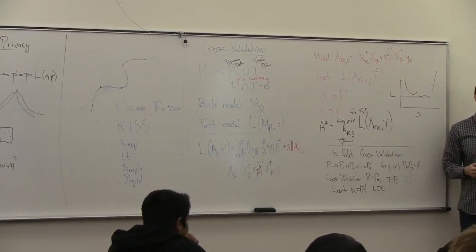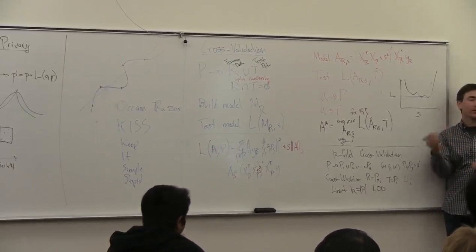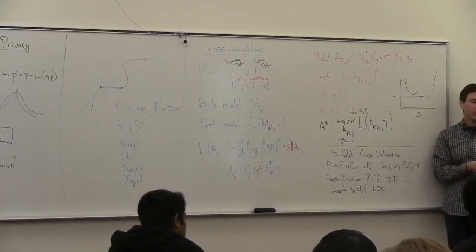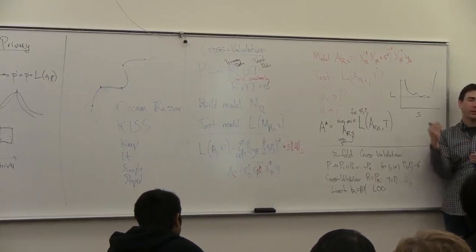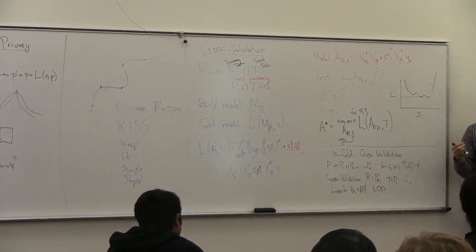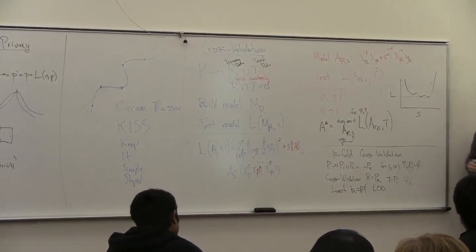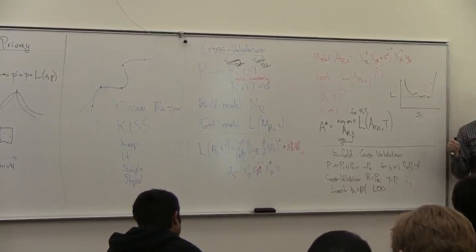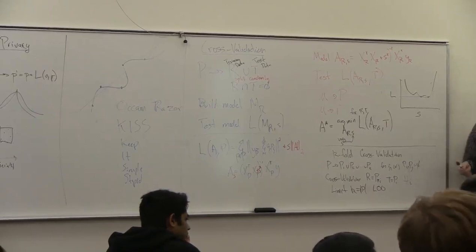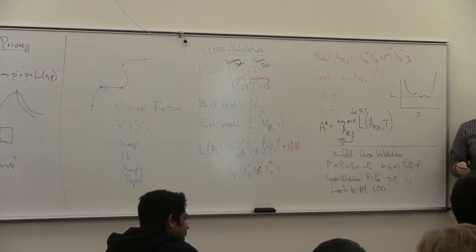A lot of the algorithms we talked about in class have had some parameter — K-means clustering has K, PCA has the number of singular values to take. How do you know which singular values are signal versus noise? You can use cross-validation for any single parameter. When you have multiple parameters, this search space just becomes harder. Searching a two-parameter space for the minimum is much harder than a one-parameter space, and ten parameters would be even worse.